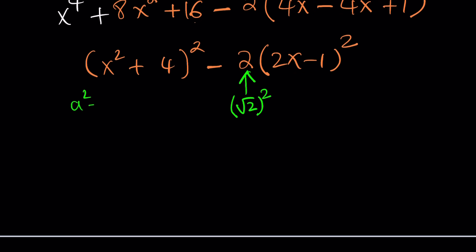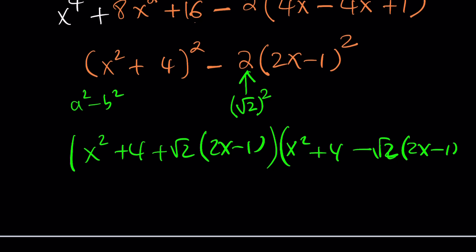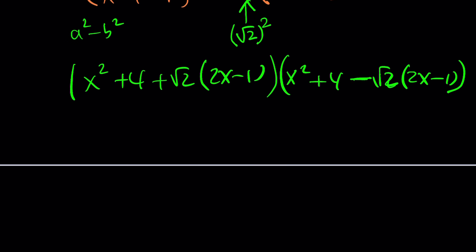And remember, difference of two squares is a squared minus b squared, which can be broken down into a plus b and a minus b. And that's going to give you x squared plus 4 and then plus root 2 multiplied by 2x minus 1. And then this will be multiplied by x squared plus 4 minus root 2 multiplied by 2x minus 1. Same idea, but with a minus sign in between.